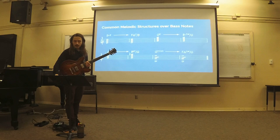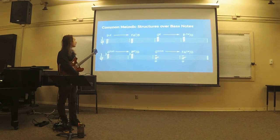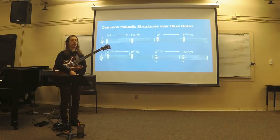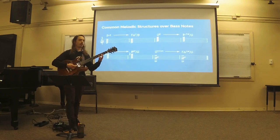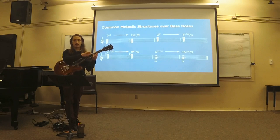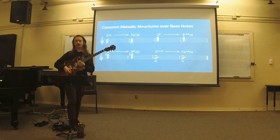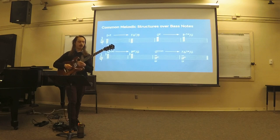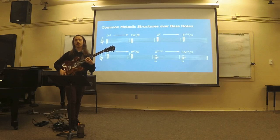These are what I think of as some common melodic structures over bass notes. Like D minor 9 — the upper structure from the third would be like an F major 7, and you could put a D on the bottom and it sounds like D minor 9. You could also use that not just as harmonic material when you're comping, but in a melodic context over D minor.